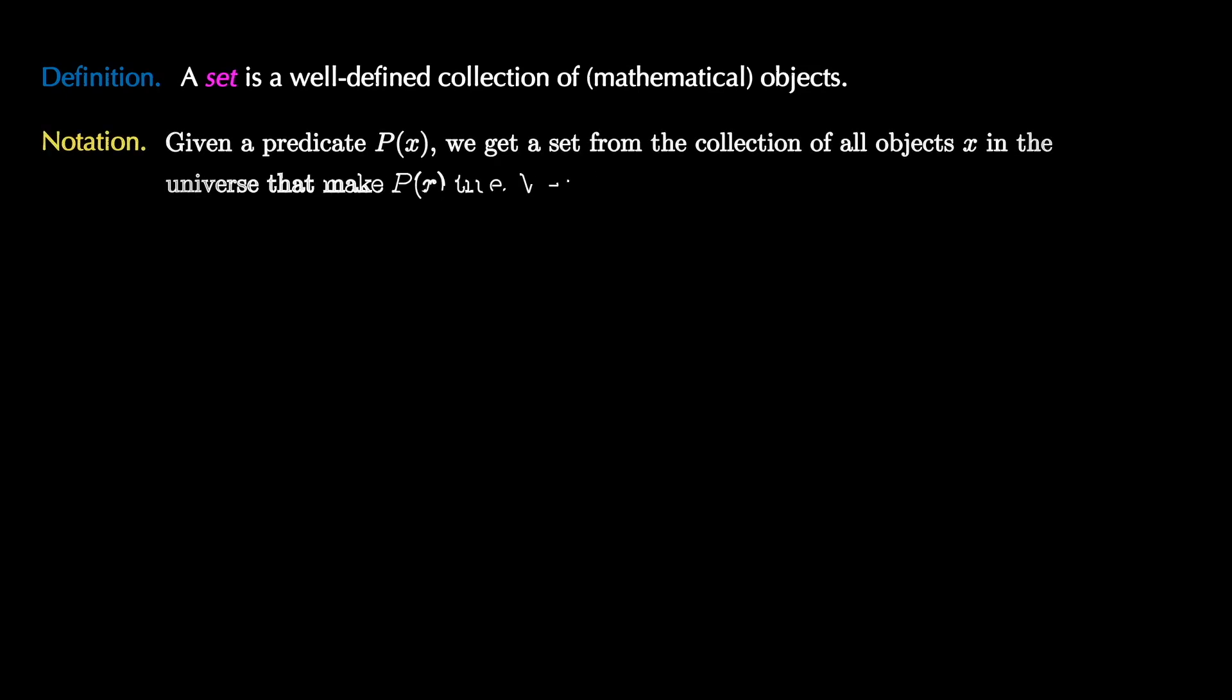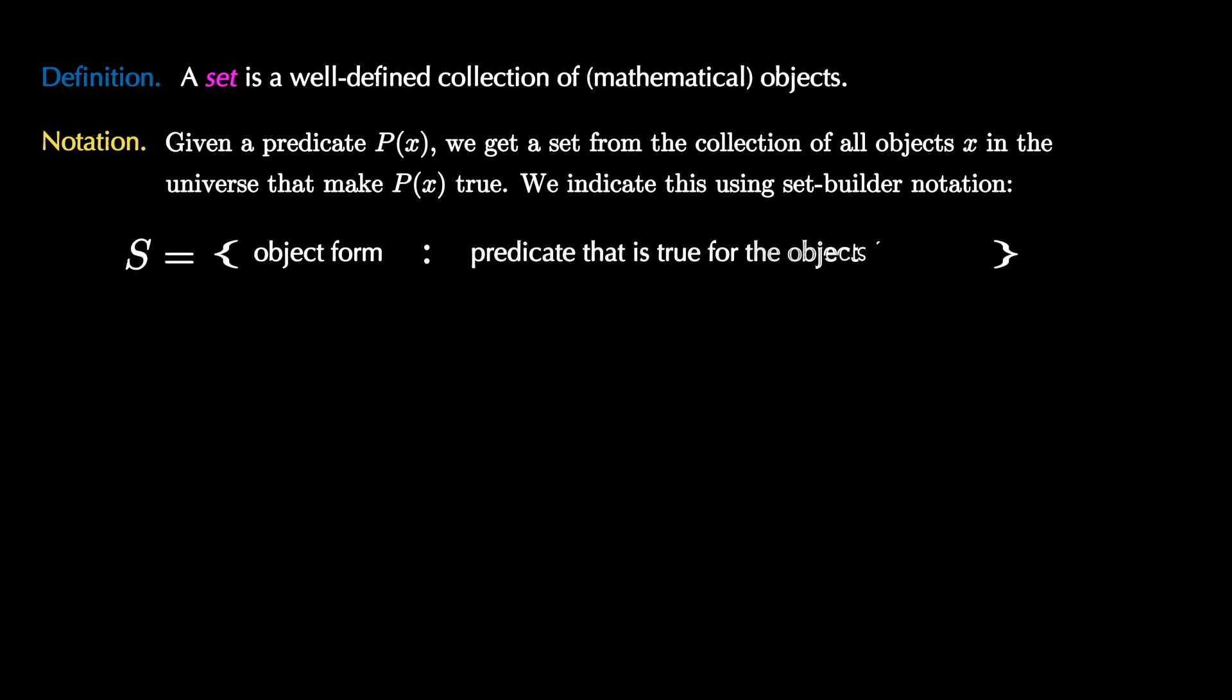To set some notation, if we're given a predicate P, we can get a set from the collection of all objects x in a universe that make P true. We indicate this using set builder notation: S equals, then we use braces to denote the set, we list the form of the object, the colon means such that, and then we list the predicate that will be true for all the objects in the set.